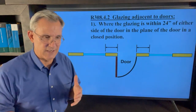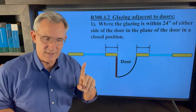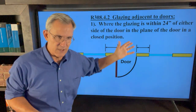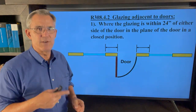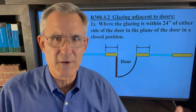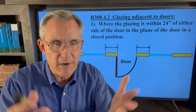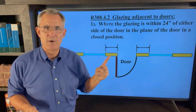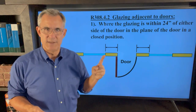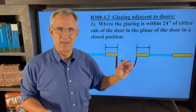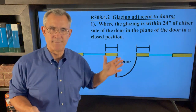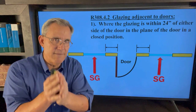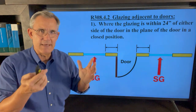Item number one on the list: glazing adjacent to a door, where the glazing is within 24 inches of either side of a door in the plane of the door in a closed position. This is the way it's been almost forever and everybody watching is probably familiar with this. You measure two feet from the door to the glass itself — if it's within two feet, this has to be safety glazing. Same thing on both sides: in the plane of the door in a closed position, safety glass is required on both sides.